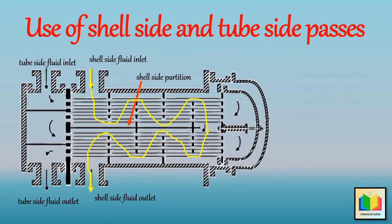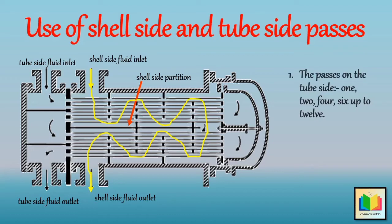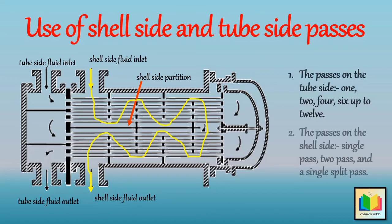The passes on the tube side are 1, 2, 4, 6, up to 12. And the passes on the shell side are single pass, two pass, and a single split pass.